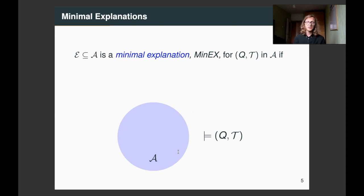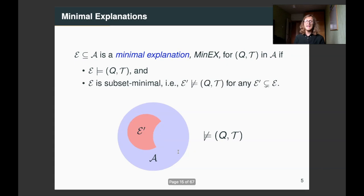And now, what do we mean by a minimal explanation, or a min-ex? A min-ex is a subset of the A-box, which entails the ontology-mediated query, and is subset minimal. That is no proper subset of it entails the ontology-mediated query.